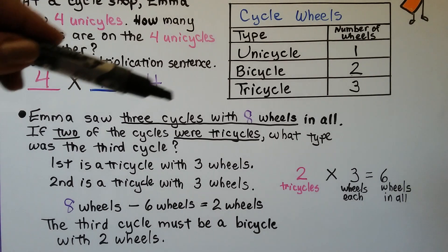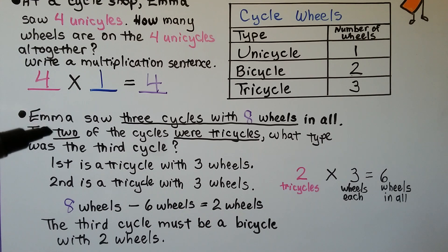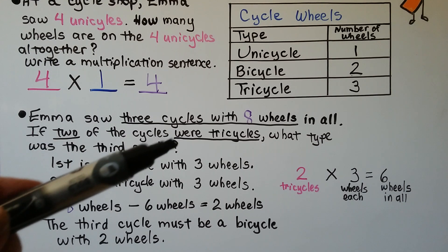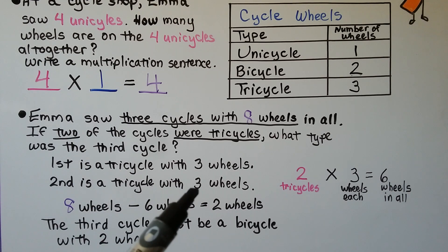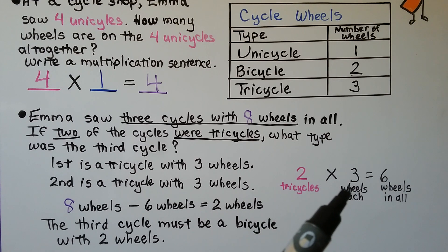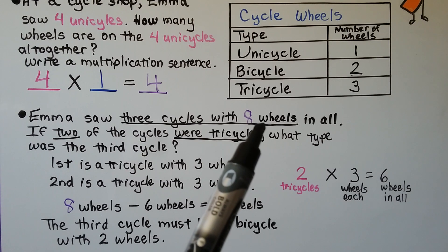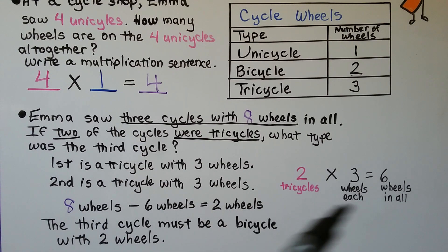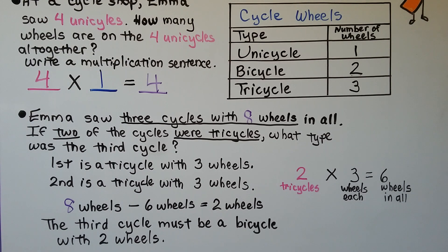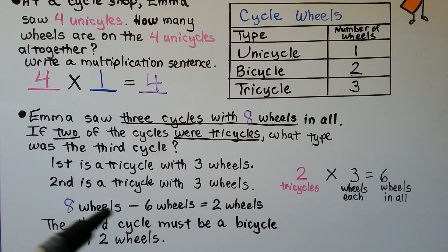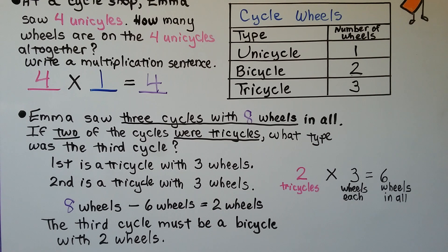Emma saw 3 cycles with 8 wheels in all. If 2 of the cycles were tricycles, what type was the 3rd cycle? Each tricycle has 3 wheels, so 2 tricycles times 3 wheels each equals 6 wheels. She saw 8 wheels total, and 8 minus 6 equals 2 wheels remaining. So the 3rd cycle must have 2 wheels — it must be a bicycle. We found how many wheels the tricycles accounted for, subtracted from the total, and that told us the 3rd cycle had 2 wheels.